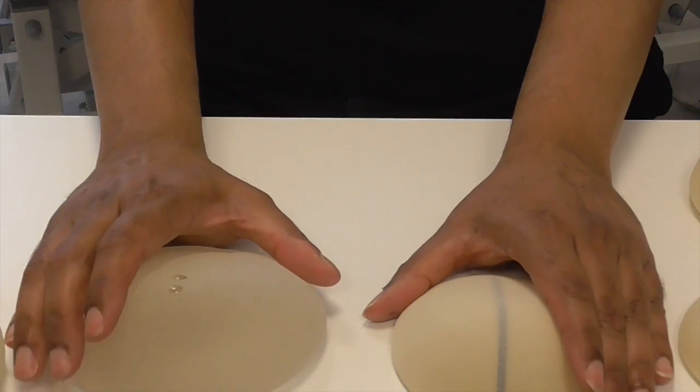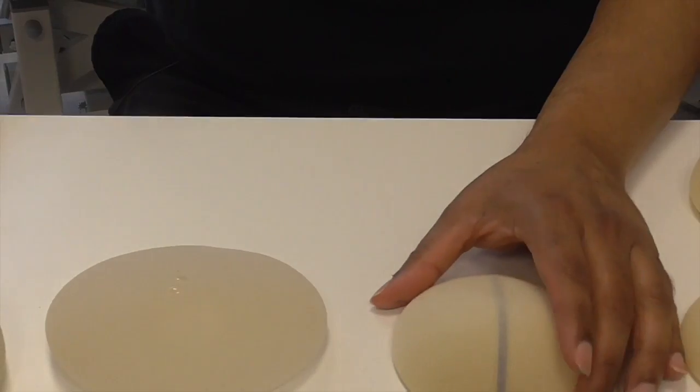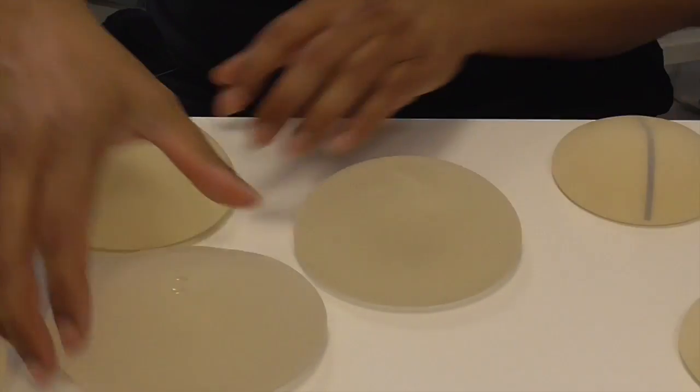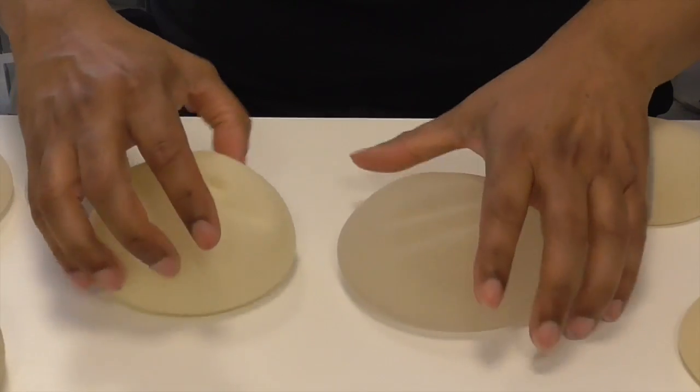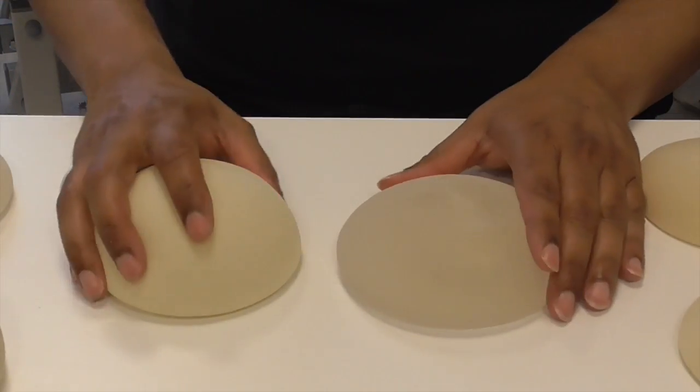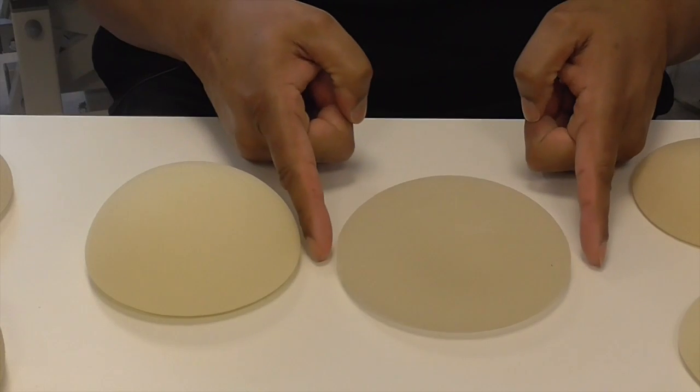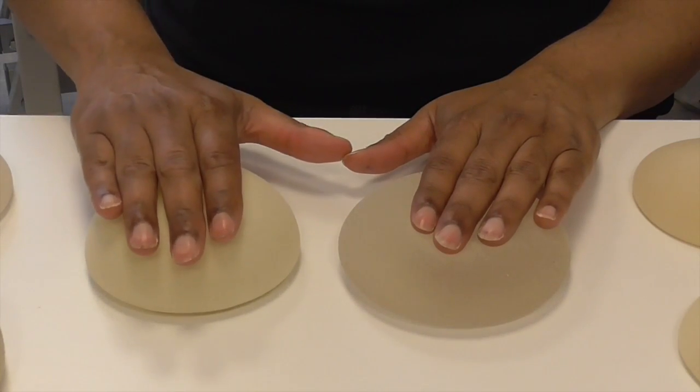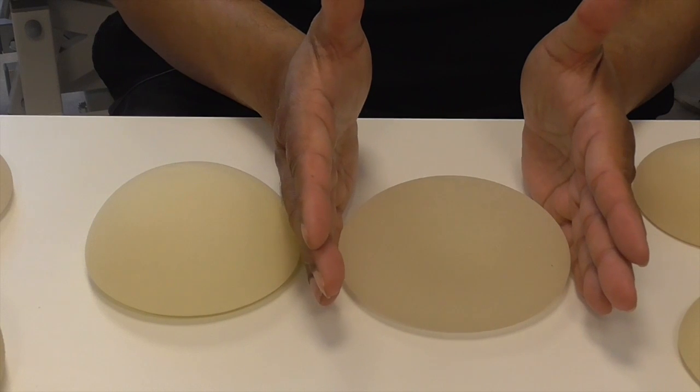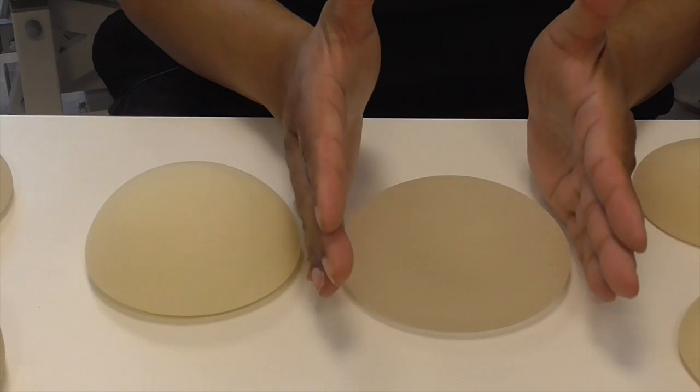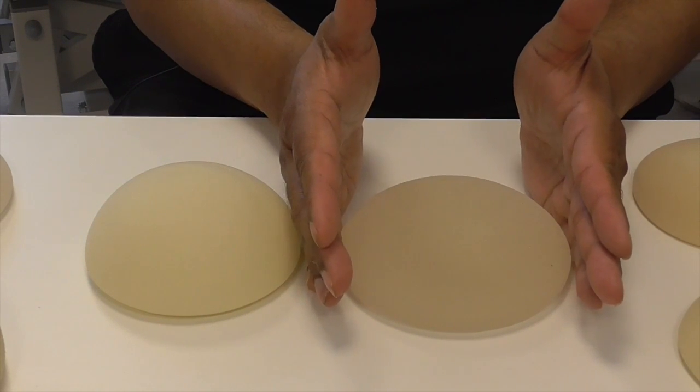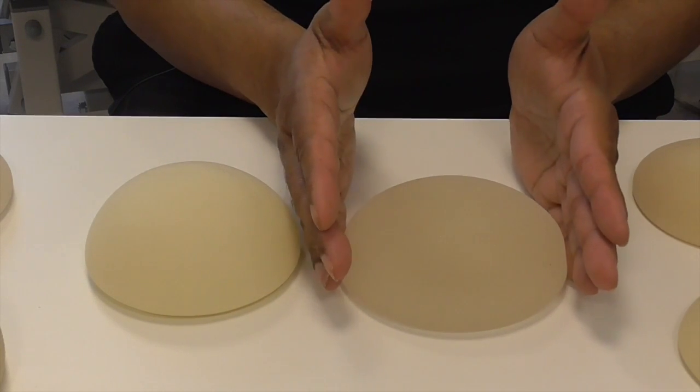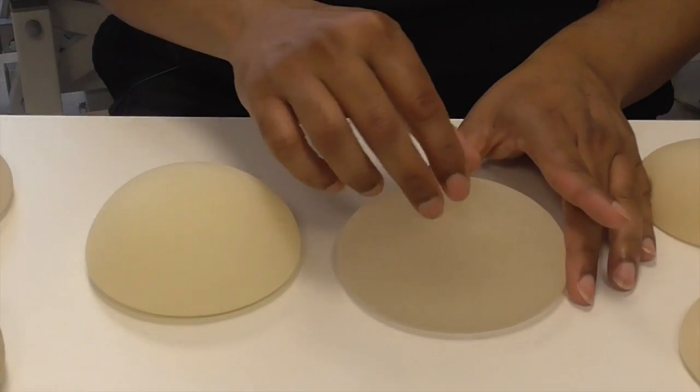The next thing about the implants is that if you look at this implant versus that implant, you see there's a difference in the base of the implants. This is much wider than this, and this is a bit flatter than that. So one has to choose an implant that is bespoke for the patient. You have to measure the patient's breast base and not choose one that is too big or too small.